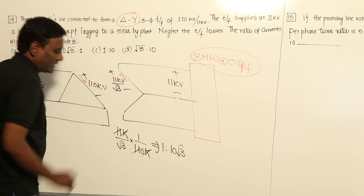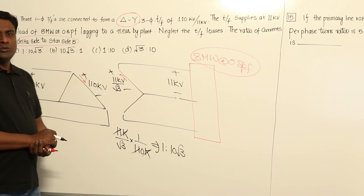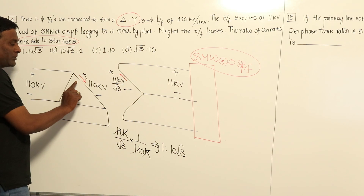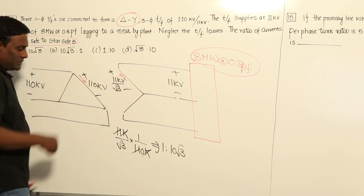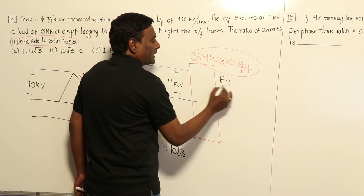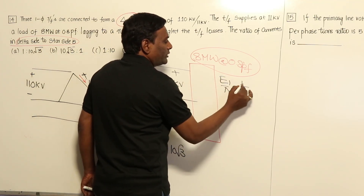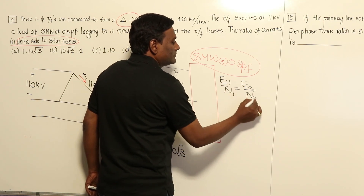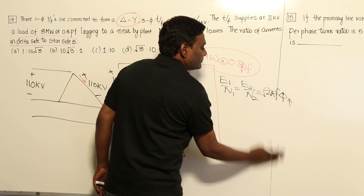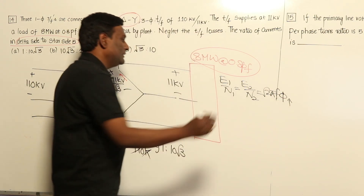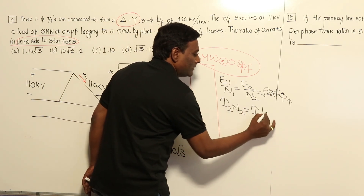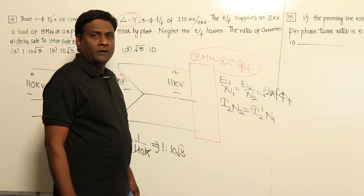So the ratio works out to 1 : 10√3. To repeat: they asked for the current ratio from delta side to star side. We know the EMF equation: e = 4.44 × f × φ_max, which gives the turns ratio relationship.